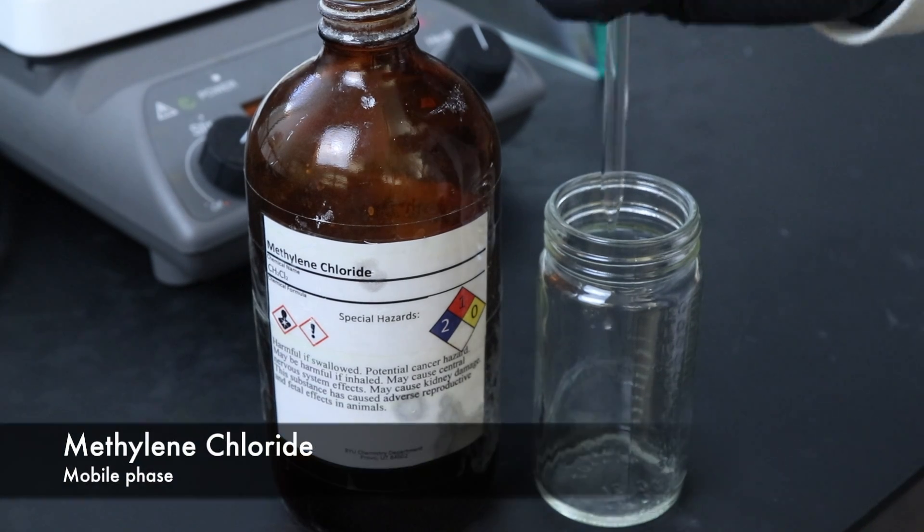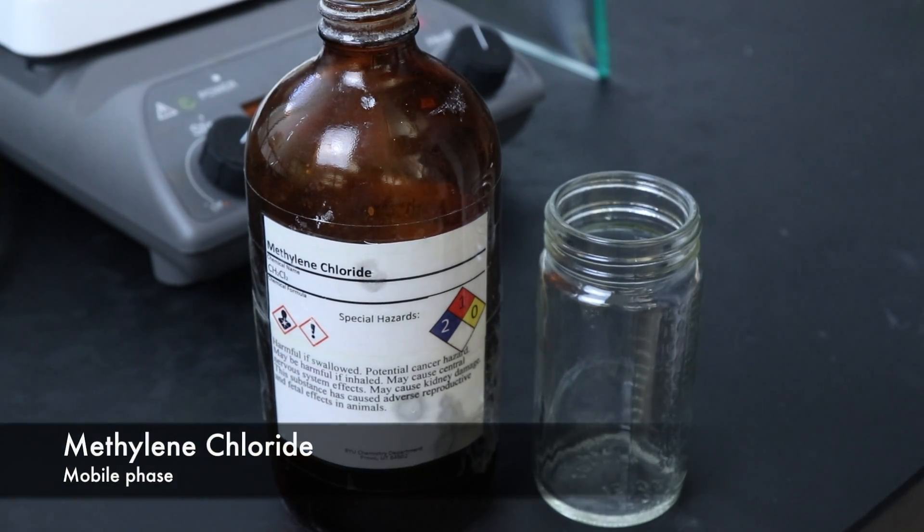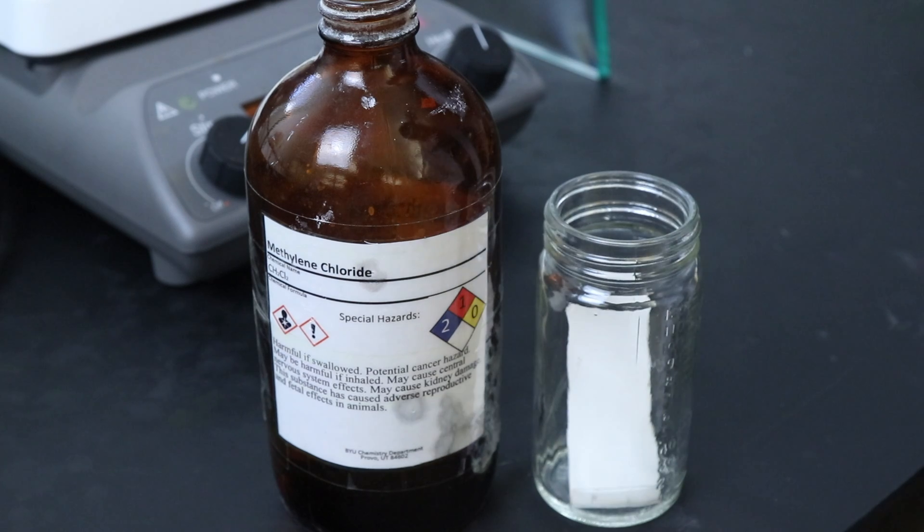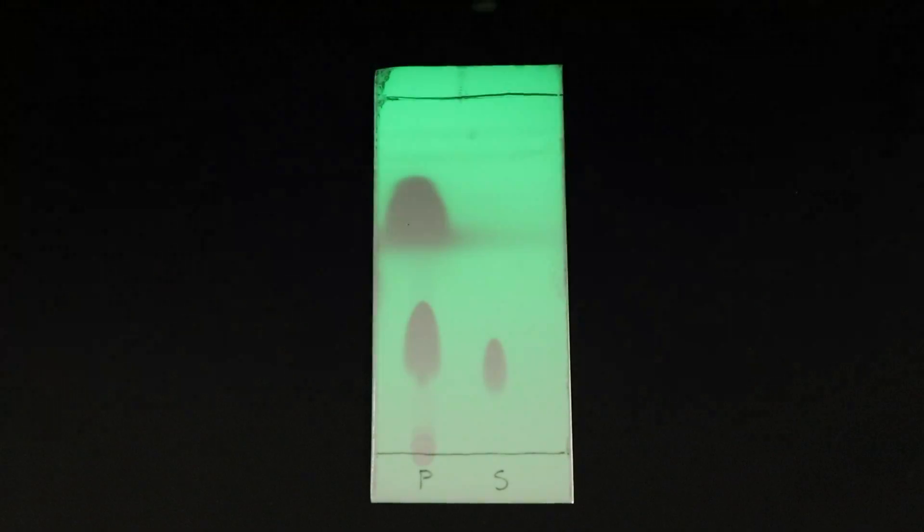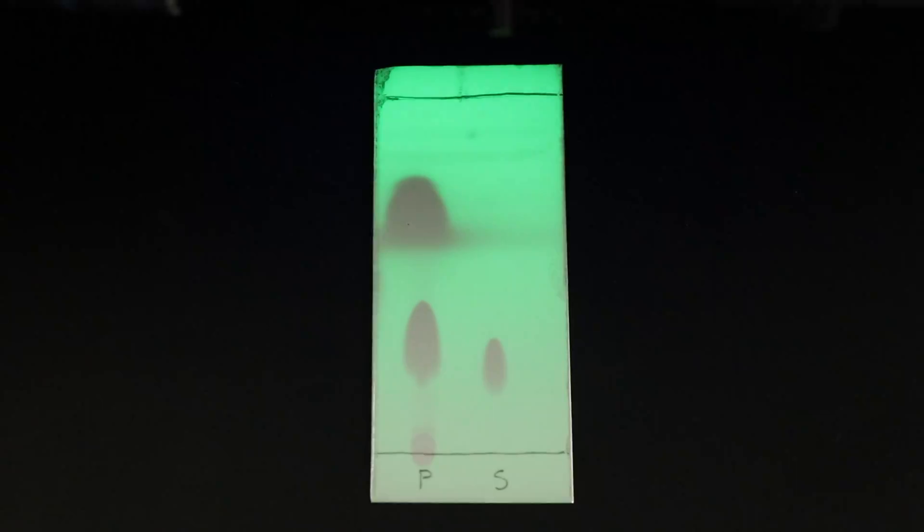Methylene chloride will be used as the mobile phase to develop the TLC plate. Here we can see that the product is definitely forming but there's still quite a bit of benzaldehyde.